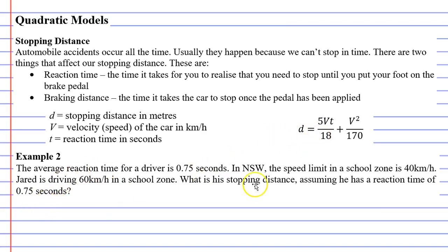All we're going to do is take that equation and substitute our values in. So I've rewritten the equation down here. To calculate our stopping distance D, we need to take 5 at the top of our fraction and times it by our velocity and our reaction time.